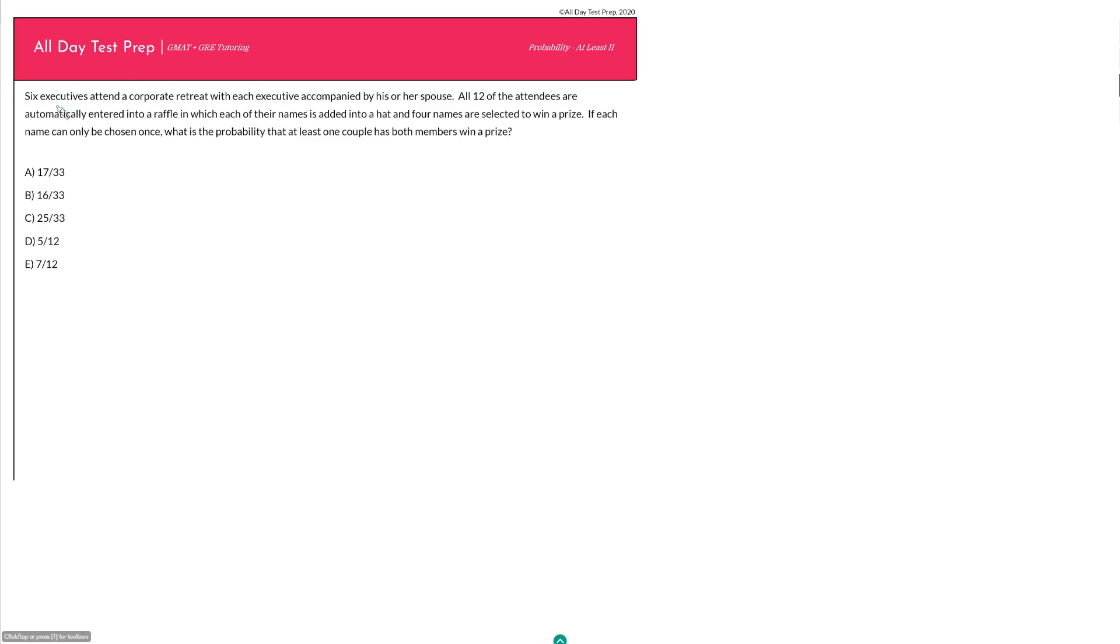This question says, six executives attend a corporate retreat with each executive accompanied by his or her spouse. All 12 of the attendees are automatically entered into a raffle in which each of their names is added into a hat and four names are selected to win a prize. If each name can only be chosen once, what is the probability that at least one couple has both members win a prize?